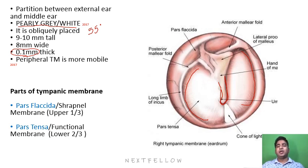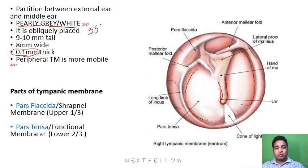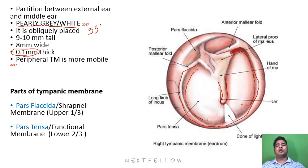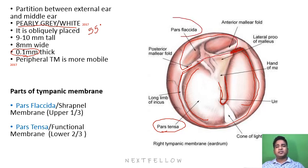The tympanic membrane consists of two parts: the first is pars tensa and the second is pars flaccida. The complete area with the annulus up to the level of the neck of the malleus or short process of malleus is pars tensa, and the area above that is pars flaccida.